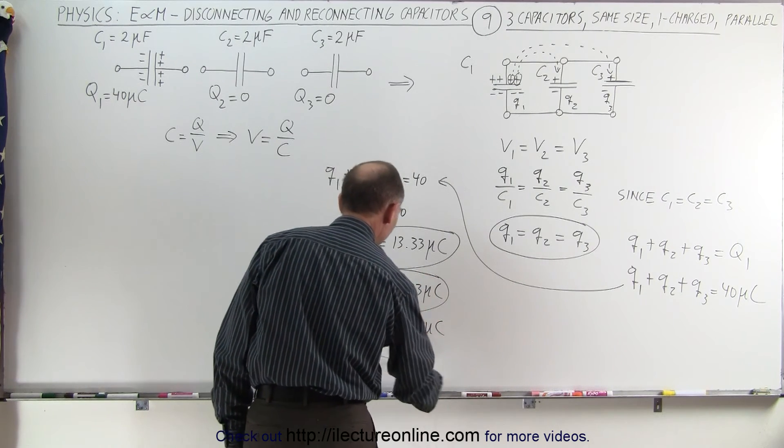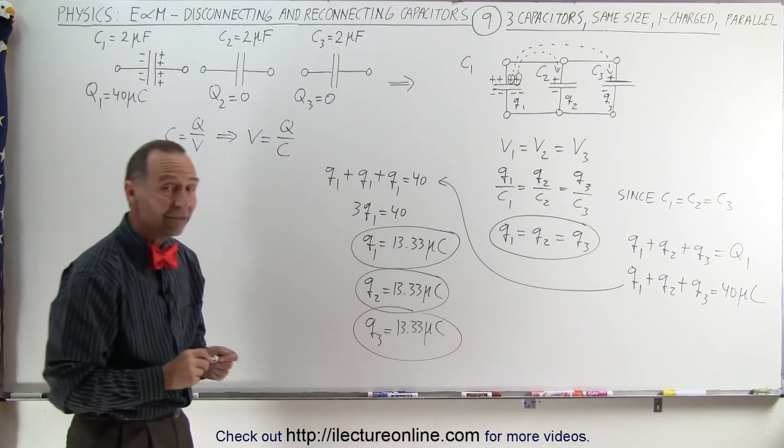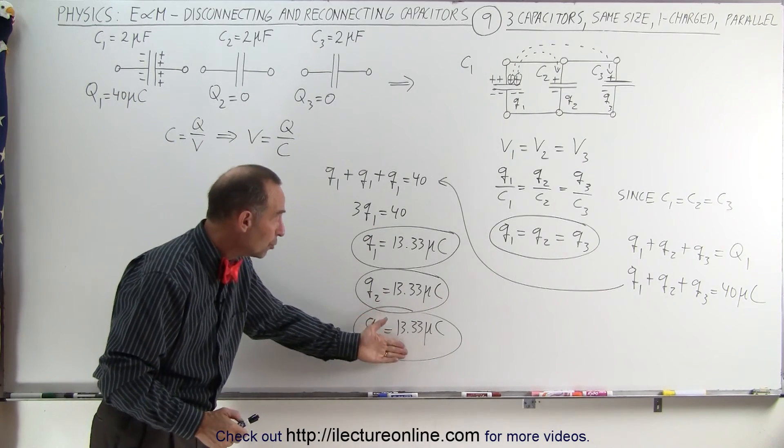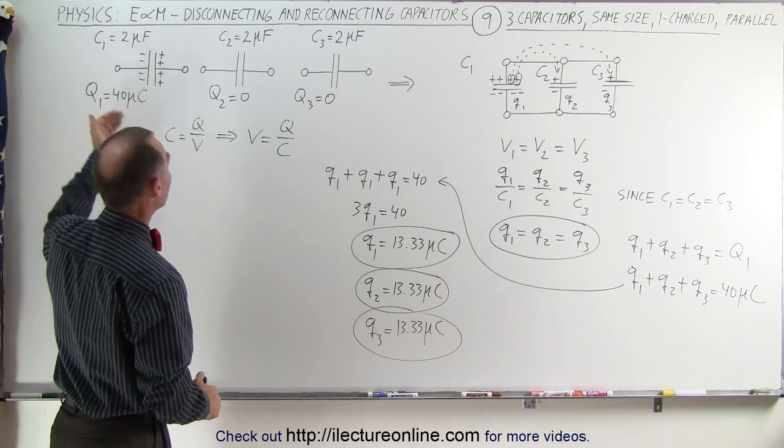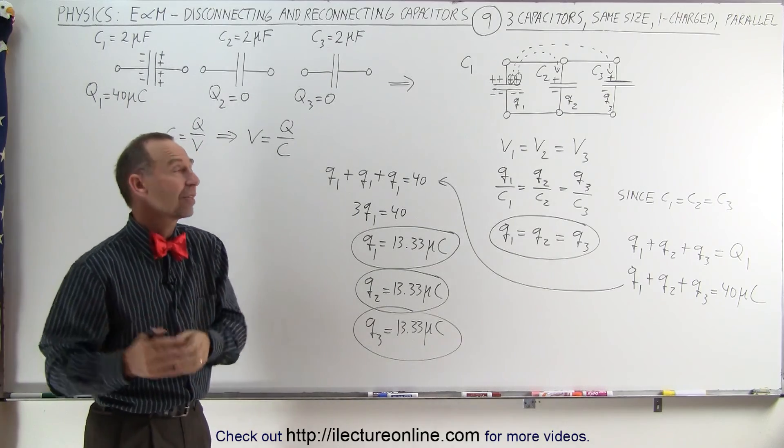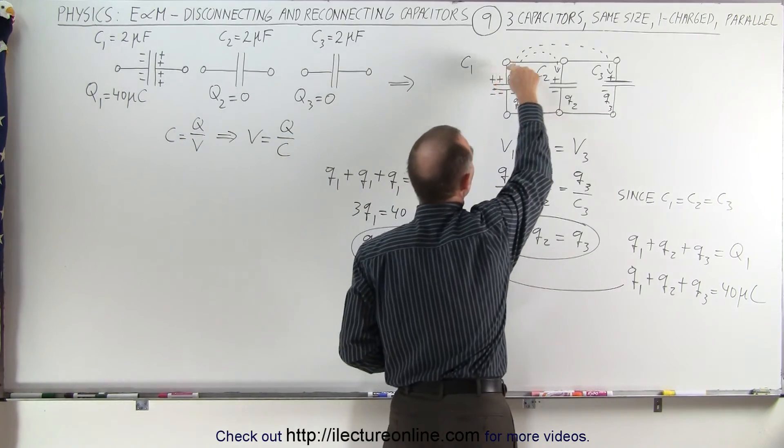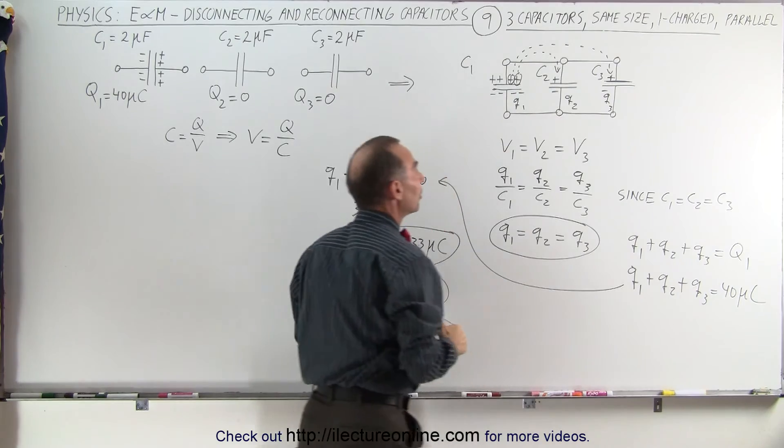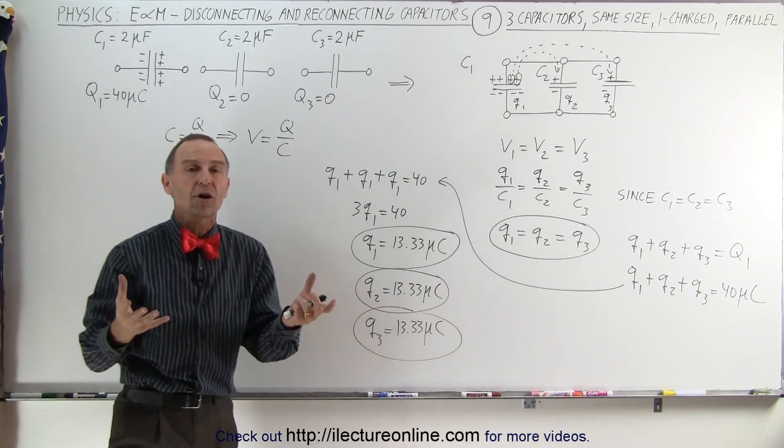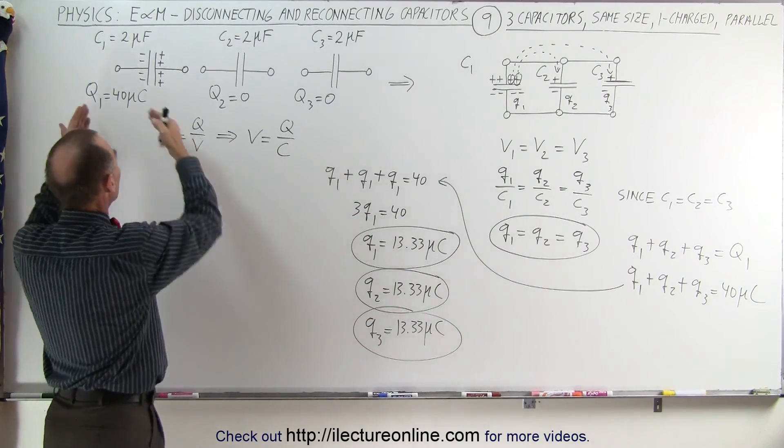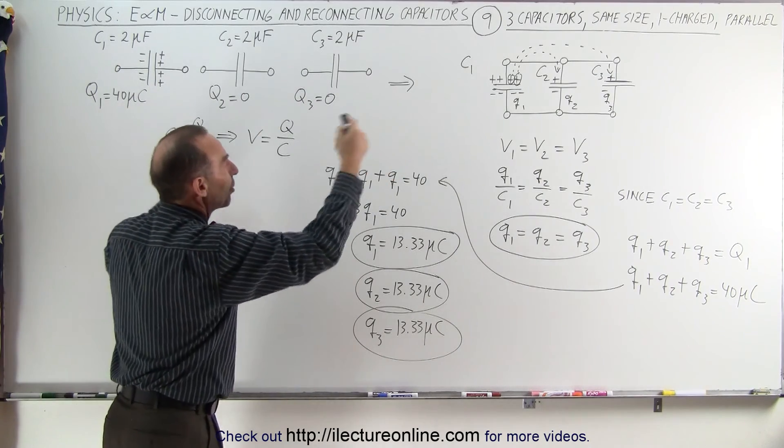And here in this example, you'll notice that if you add these three together, you do get the original charge that you started with. The reason why that's the case is because all the positive ends are connected to one another, so you're not negating any charge—you're simply redistributing the charge.